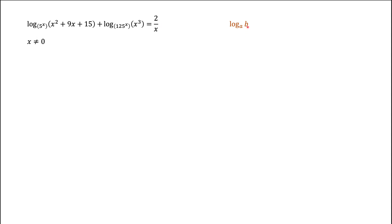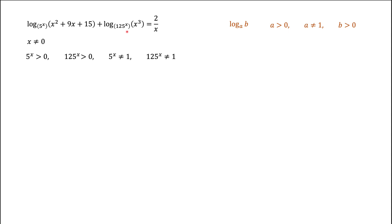When we have a logarithm of b with base a, the base has to be positive and cannot be one, and the argument b also has to be positive. Those are the restrictions on both logarithms. Looking at the bases, we have 5^x and 125^x. These conditions are satisfied automatically because 5 to the x power and 125 to the x power are always positive, as they are exponential functions.